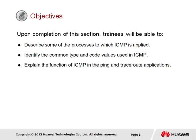Upon completion of this section, it is generally expected that trainees will be able to describe some of the processes to which ICMP is applied, identify the common type and code values used in ICMP, and explain the function of ICMP in the ping and traceroute applications.